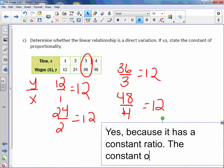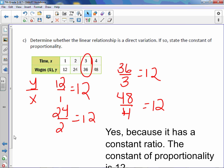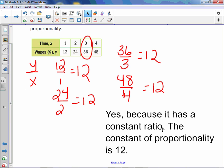Because it has a constant ratio. And then it says state the constant of proportionality. The constant of proportionality is, and in this case, 12. So that ratio, that 12, is the constant of proportionality. And again, going back to what we talked about earlier, if we wanted to write an equation, it would be y equals 12x.